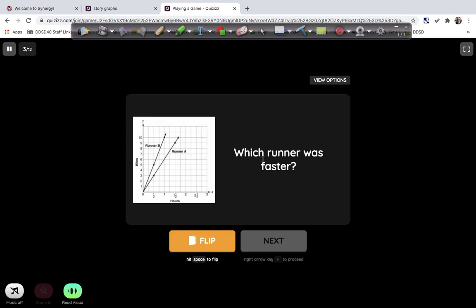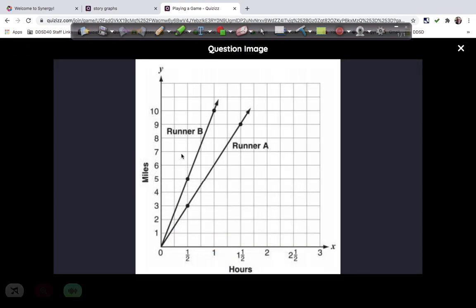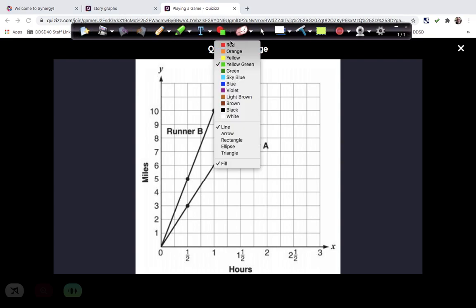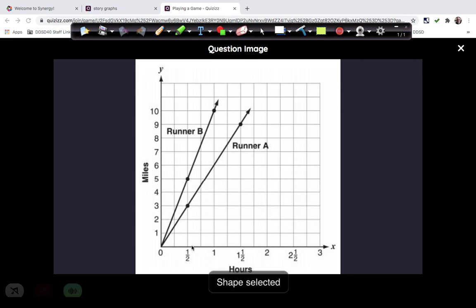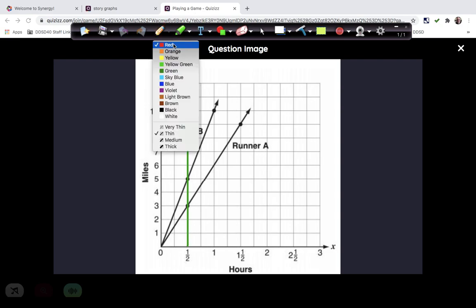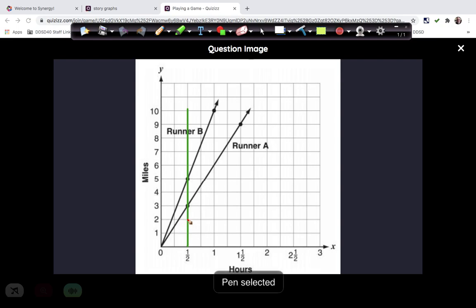Which runner was faster? This is a good one to also look at. And what's really important on this, I'm going to see if I can pull out a line. I don't usually use a line tool, but I do want to make a red line here. And I'm just going to pick, for example, one half an hour. So I'm going to start right there.